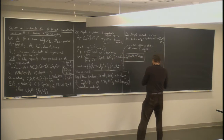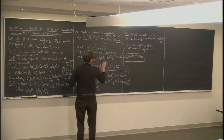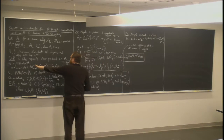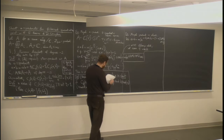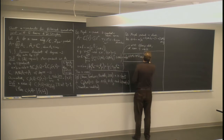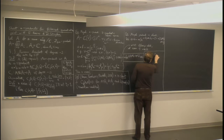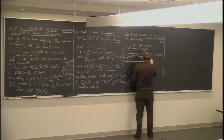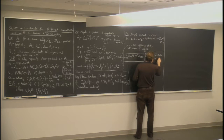Another approach to parameterizing star products is through filtered quantizations. Now we will define a filtered quantization. It will be Z-mod-two equivariant. This is a Z≥0 filtered associative algebra — let me call it script-A — this is the union over i≥0 of filtration pieces Fᵢ, and the associated graded of script-A equals A.